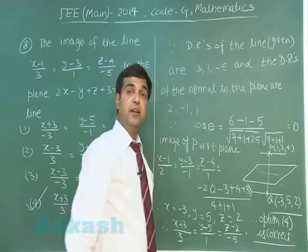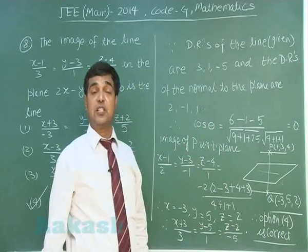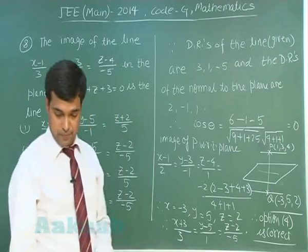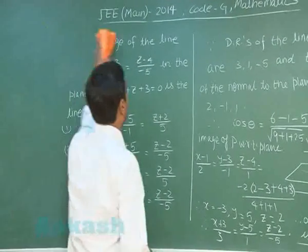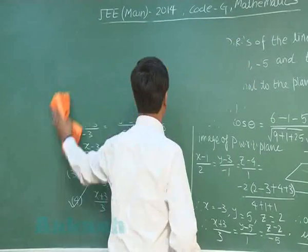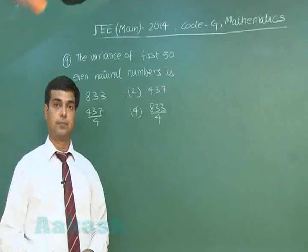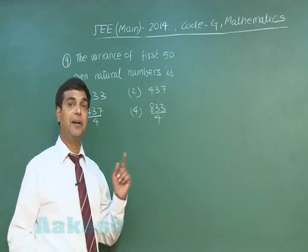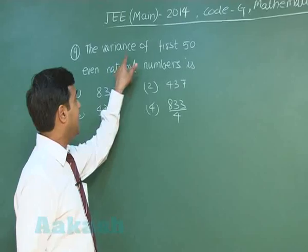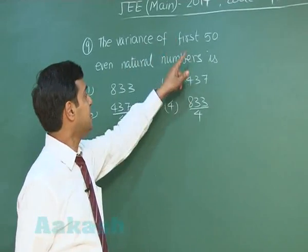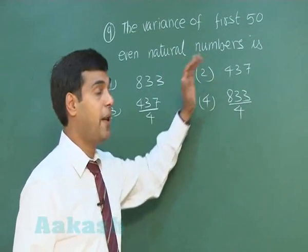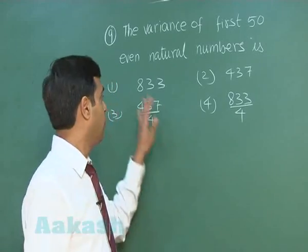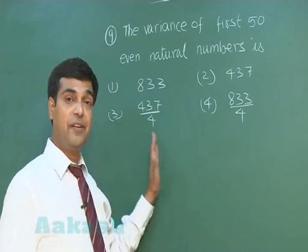In this manner we can find the solution of this question. Let us move to question number 9. The variance of the first 50 even natural numbers is a question from statistics — four options are given.